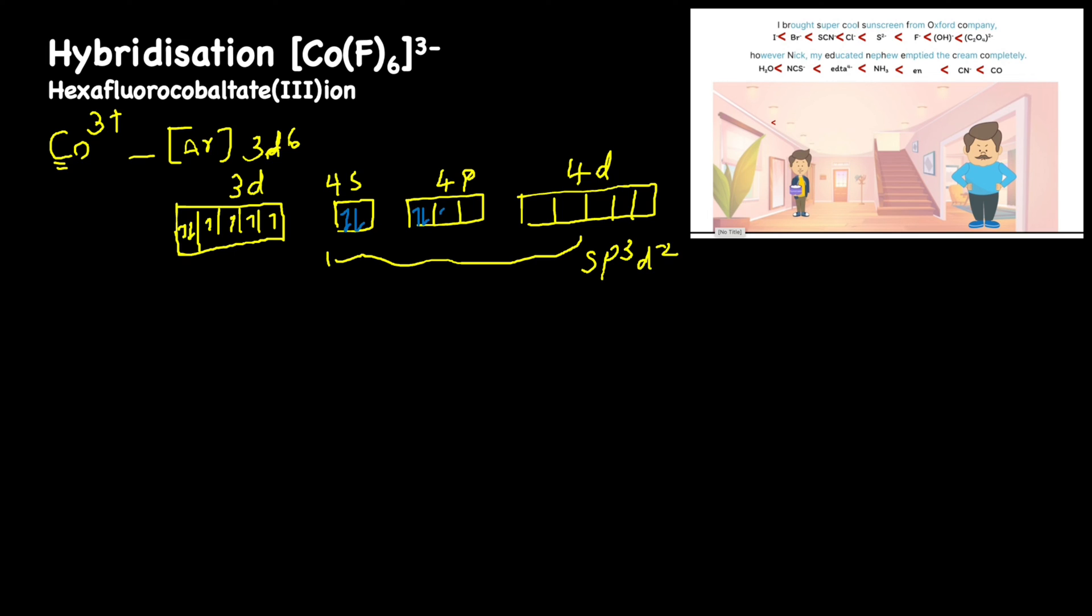There are 6 fluoride ions, so they give 6 pairs of electrons for bonding. All these electrons are from fluoride ion. So hybridization is sp3d2 hybridization and the geometry is octahedral geometry.